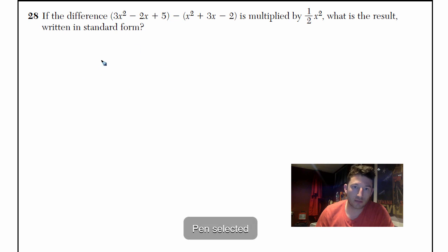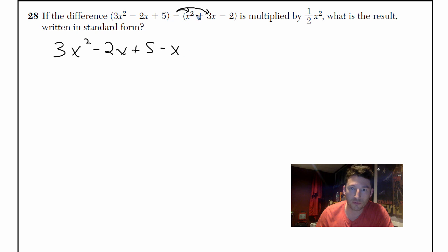All right, so really I'm just gonna write it out again. 3x² - 2x + 5 - x². I'm gonna distribute this negative though. That's the most important thing. So that negative goes into everything, so minus x² - 3x + 2.